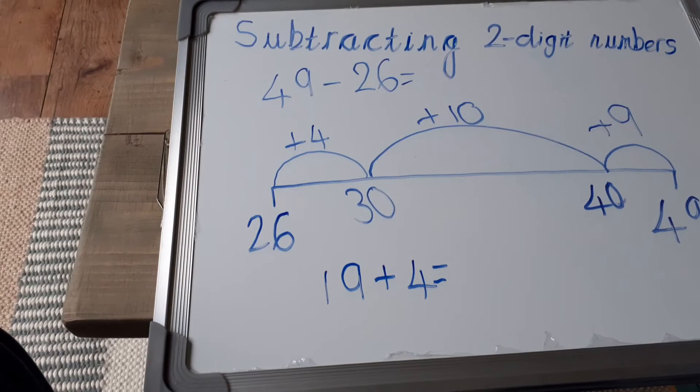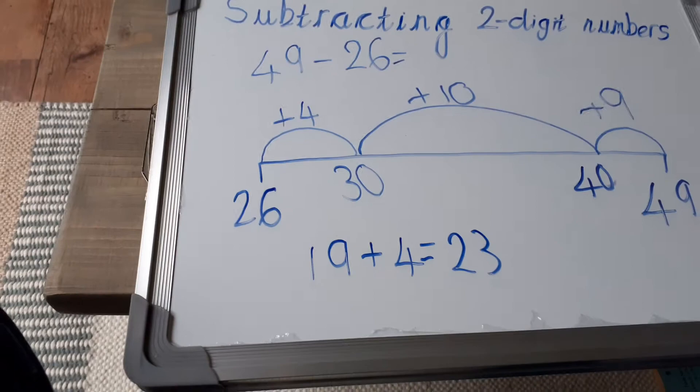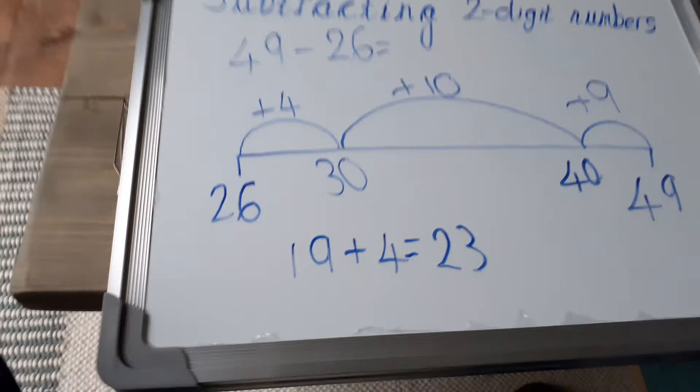You can put 19 in your head and count on if you want to. Or you can round that 19 up to 20 and do 20 add 4, which will be 24, but take the 1 away that you rounded up there. So the answer is 23. So 49 take away 26 equals 23.